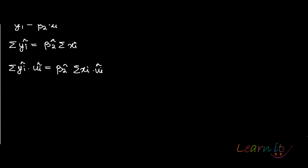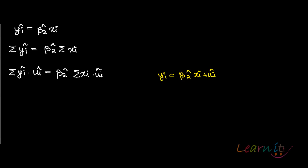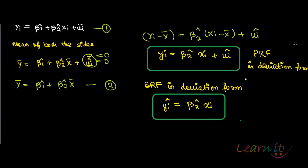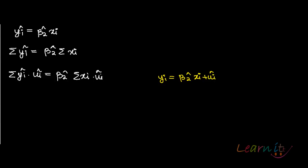The PRF in deviation form can be written as yi equals beta 2 hat xi plus ui hat. You've already seen that. This is the way population regression function is written.